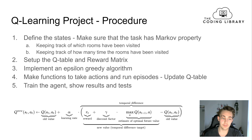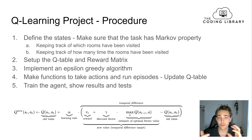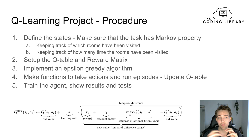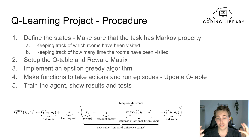We're going to implement an epsilon-greedy algorithm because in the beginning we need to explore a lot in the environment, and then later on we want to explore less and exploit more of what we've already learned. This is a really important factor in Q-learning and reinforcement learning in general.